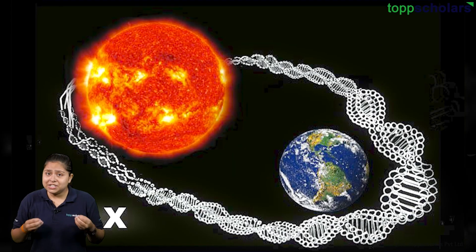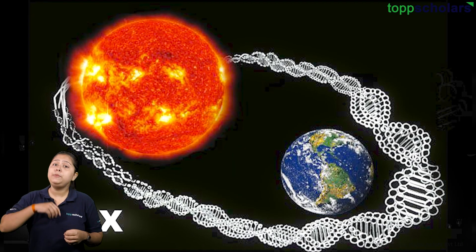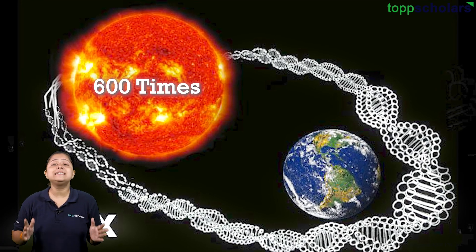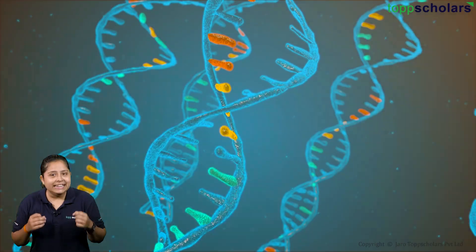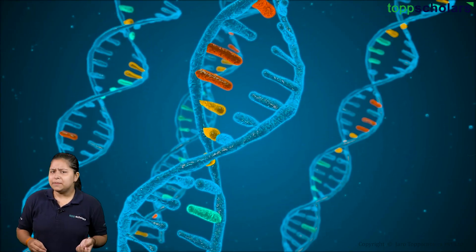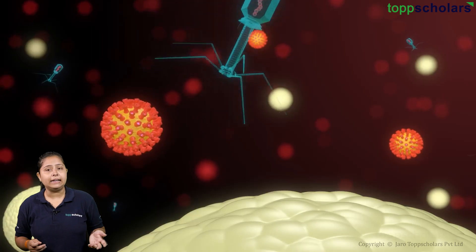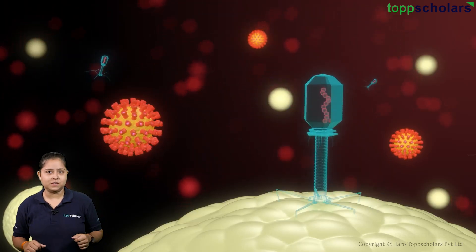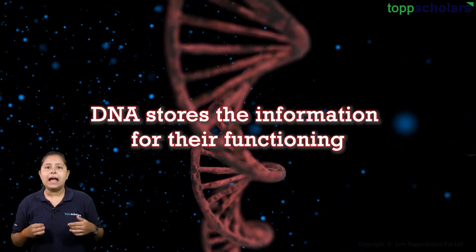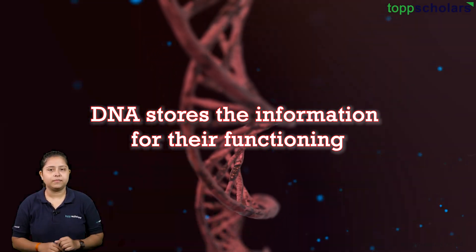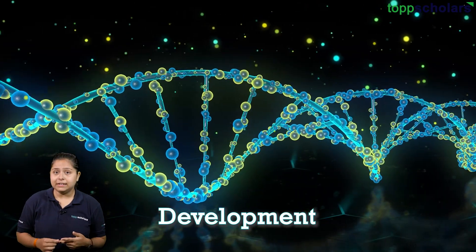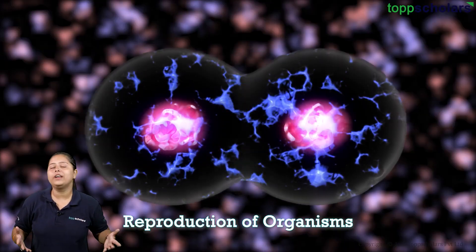That is a whopping 100 trillion meters of DNA — enough to stretch up to the sun and back not once but 600 times. DNA is the genetic material of all organisms, except for a few exceptions like the RNA viruses. All organisms have DNA to store their information and for their functioning. It contains information for the survival, development, and reproduction of organisms.